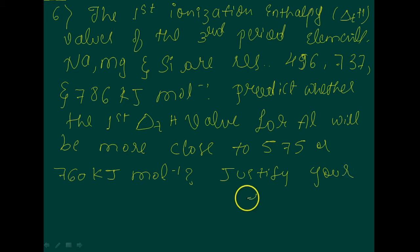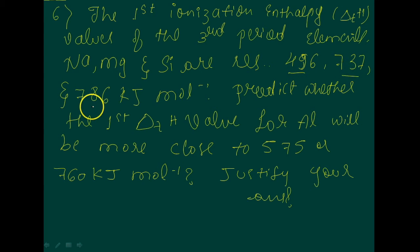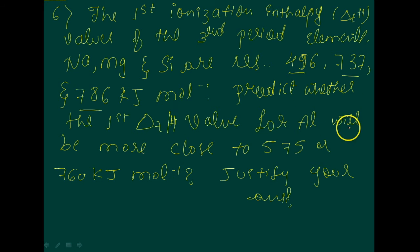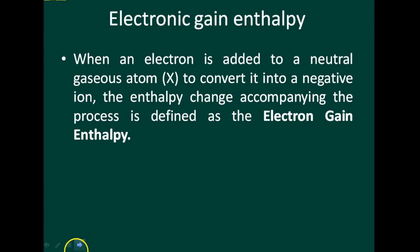This is the question. Let me re-read it: the first ionization enthalpy values of the third period elements — sodium, magnesium, and silicon — are respectively 496, 737, and 786 kilojoule per mole. Predict whether the first ionization enthalpy value for aluminium will be more close to 575 or 760 kilojoule per mole. Justify your answer.